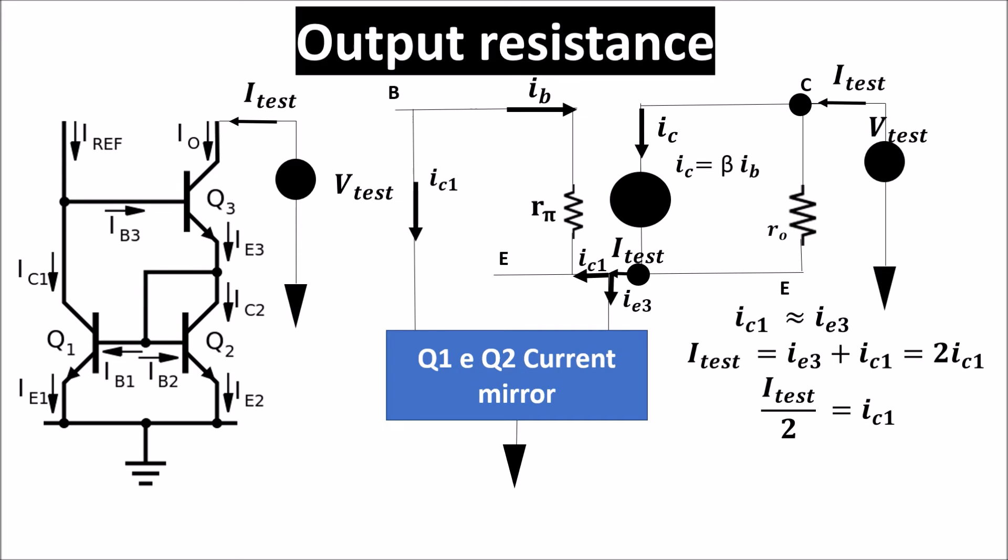Looking from the emitter of Q3 towards the mirror, we see a low resistance, in any case very low in comparison with little RO. So we can assume V test dropping completely on little RO.